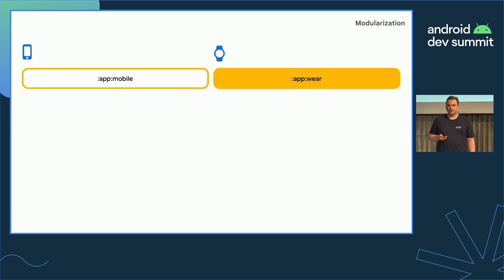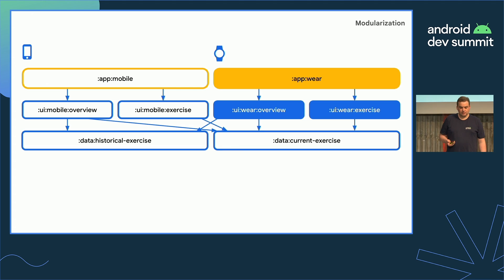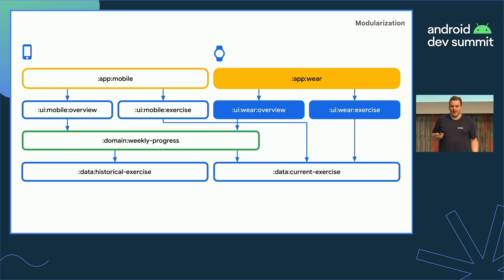We'll add a new app module for Wear and also add new UI modules. Compose for Wear OS includes libraries optimized for the wrist, so we can't reuse the UI modules from mobile — and in any case, the screens are going to be different. The new UI modules can use the existing data modules because those are UI-agnostic. And if we had a domain layer, which can make it easier for UI modules to access data, we could also share that between the mobile and Wear apps — there's no need to make it device-specific.